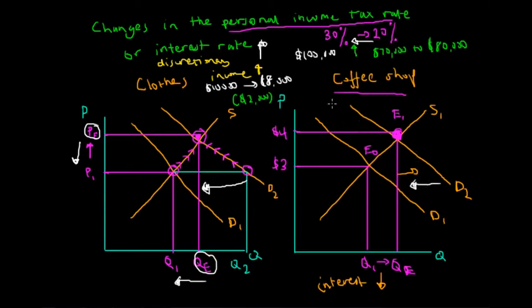So these are the two different types of effects that changes in personal income tax rates or changes in the interest rate would have on stores such as clothing or coffee. And now you can apply this analysis to any type of good or service that requires more or less money than you have now. And so changes in the personal income tax rate, whether it be an increase or a decrease, would either shift the demand curve to the left or to the right respectively.